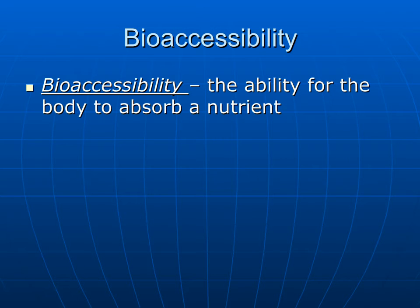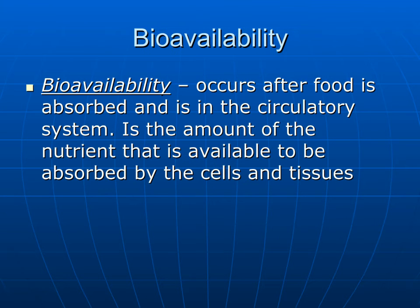The next two slides are going to look at the definition of bioaccessibility and bioavailability. First, we're going to take a look at bioaccessibility, which is the ability of the body to absorb the nutrients. It is highly related to bioavailability as you must make the nutrients available before you can actually use them. This is often discussed as a process that occurs within the GI tract when we actually digest our food. Bioavailability is the body's ability to take those nutrients from the foods that we consume through digestion and absorption, and it makes them available for things such as maintenance, repair and growth.